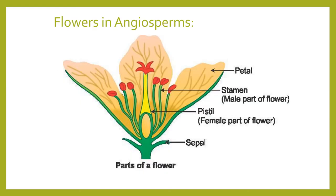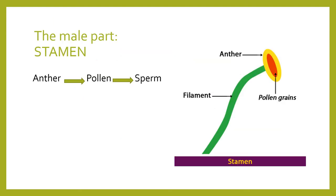Before we can understand fertilization, we have to understand the parts of the flower in angiosperms. There are the petals and the sepal — the sepal is the two green leaves on the bottom that hold all the parts of the flower. Petals attract insects so that pollination can happen. Most flowers have a male and a female part inside the same flower — the male part is the stamen and the female part is the pistil.